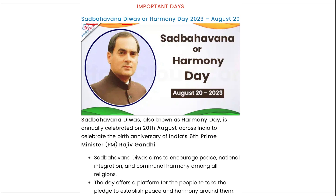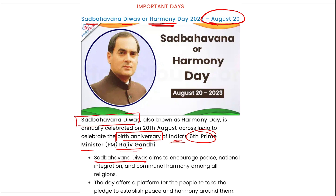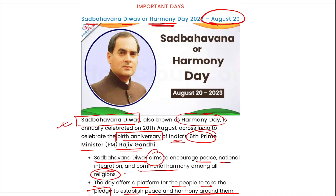Sadbhavna Divas or Harmony Day is observed on 20th August across India to celebrate the birth anniversary of India's 6th Prime Minister Rajiv Gandhi. Sadbhavna Divas aims to encourage peace, national integration and communal harmony among all religions and offers a platform for people to pledge for peace and harmony. In 2023, it was the 79th birth anniversary of Rajiv Gandhi, who was born in 1944.